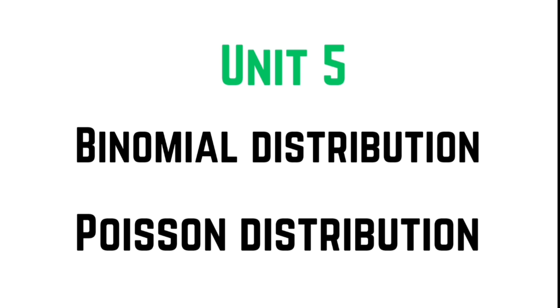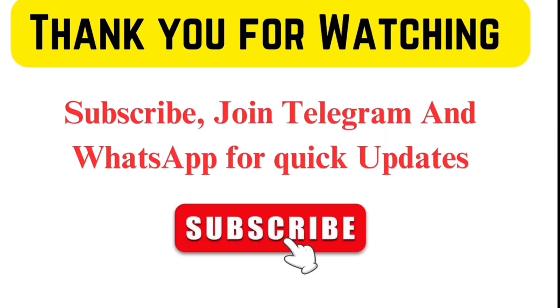From Unit 5, we get total binomial distribution and Poisson distribution. Thank you for watching our video. Join our Telegram channel, link in the description.